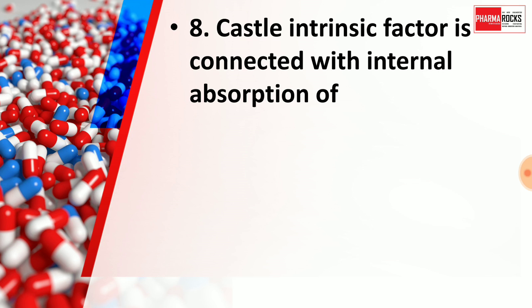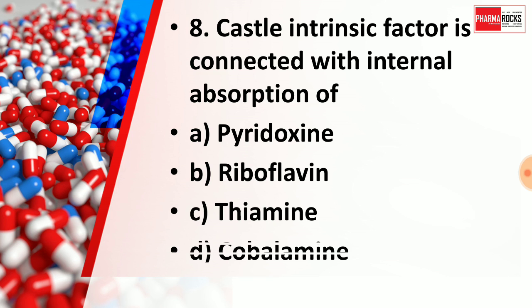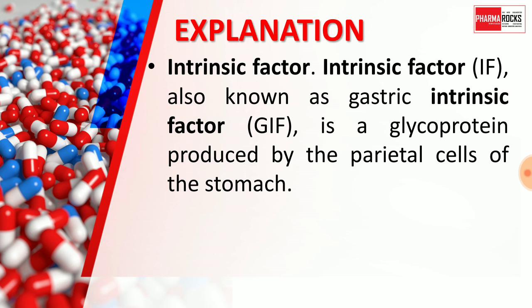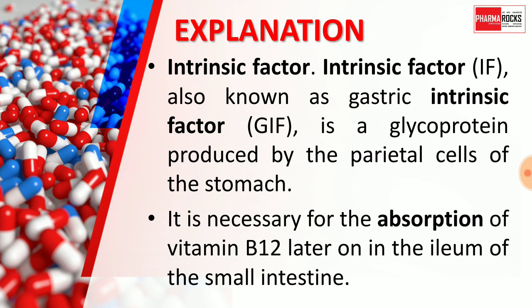Question number 8: Castle's intrinsic factor is connected with the intestinal absorption of — Option A: pyridoxine, Option B: riboflavin, Option C: thiamine, Option D: cobalamin. The right answer is Option D, cobalamin. Intrinsic factor (IF), also known as gastric intrinsic factor (GIF), is a glycoprotein produced by the parietal cells of the stomach. It is necessary for the absorption of Vitamin B12 in the distal ileum of the small intestine.